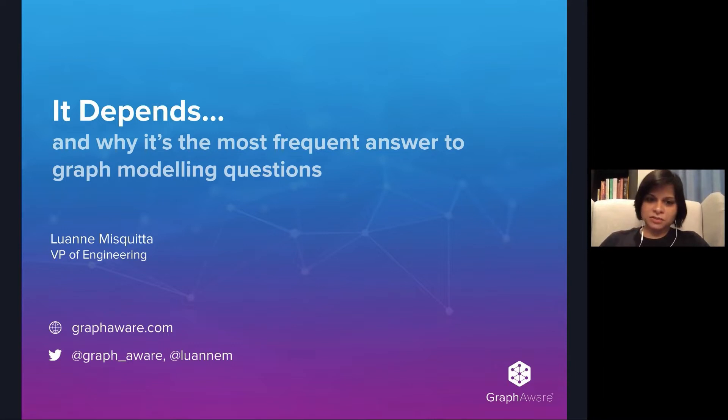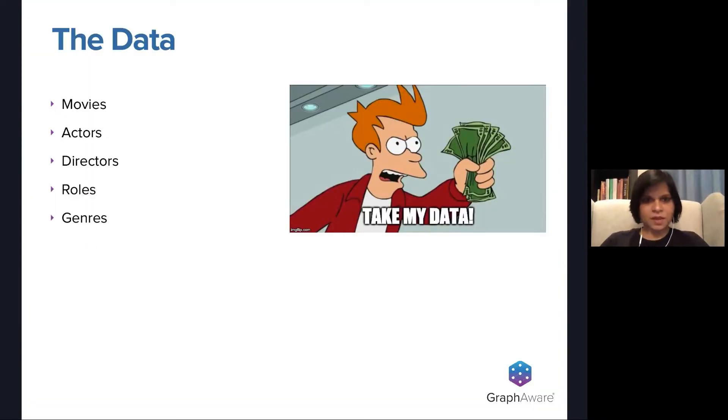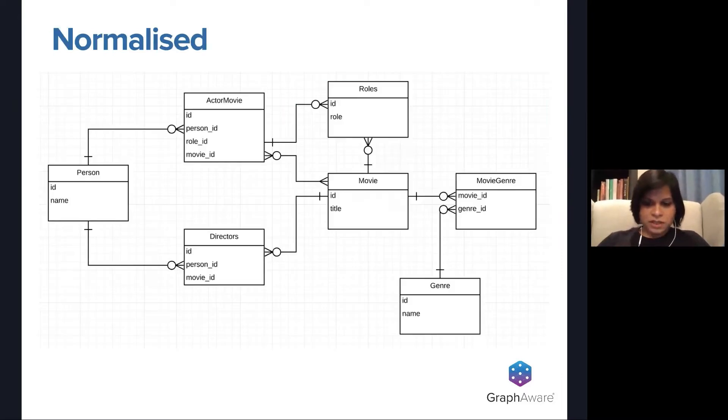I've been a user of Neo4j for 10 plus years now and 'it depends' is one of my favorite answers. So the goal of this talk is to show you the reason why you hear 'it depends' from a lot of good graph modelers. Since we have only 10 minutes, we'll stick with a very familiar Neo4j domain, which is the movie dataset. So let's say you've been given a set of data about movies, actors, directors, and so on, and someone tells you to go off and model a graph.